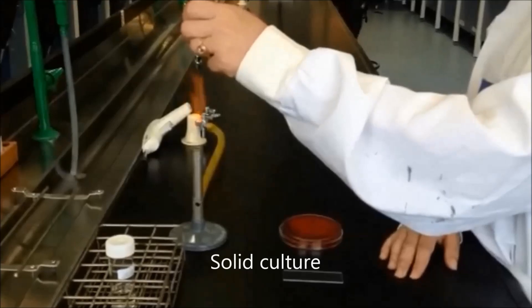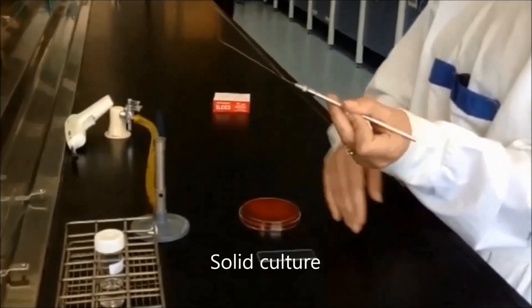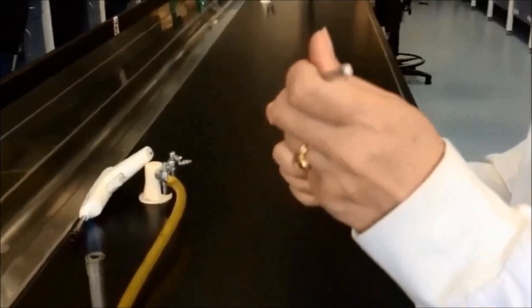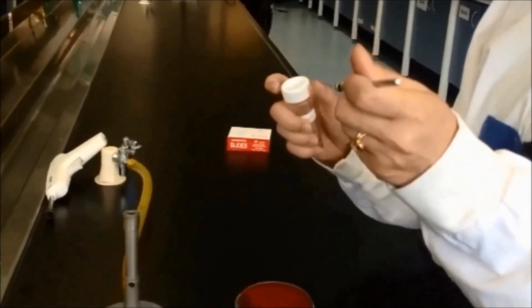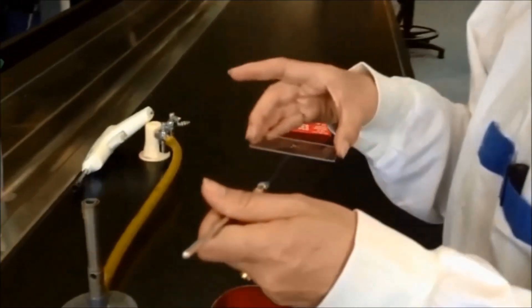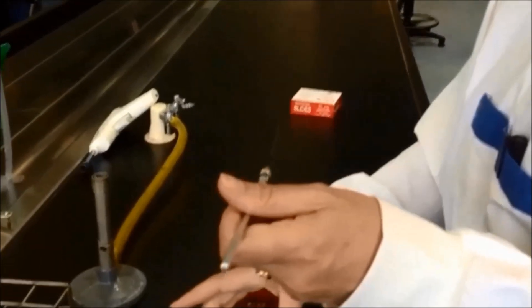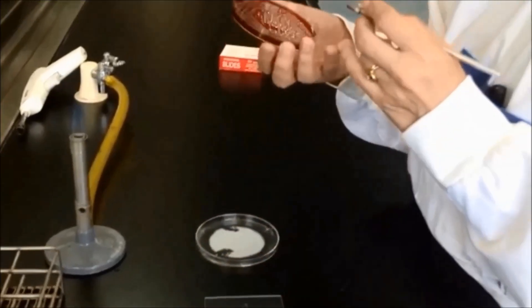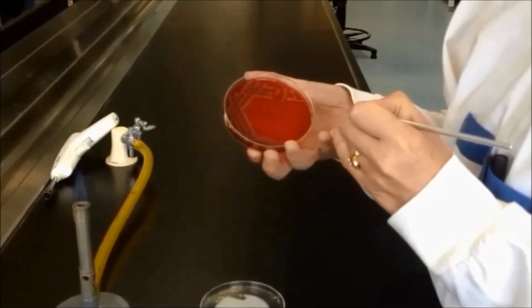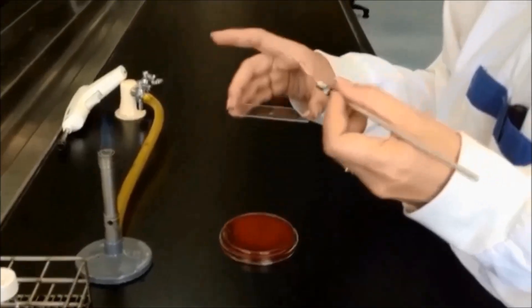To prepare a smear of a solid culture, for example from an agar plate, start by flaming an inoculation loop and waiting for it to cool. Place a loopful of sterile water onto the center of a clean slide. Transfer a small amount of an isolated colony into the drop of water. Emulsify well and then spread thinly across the surface of the slide.